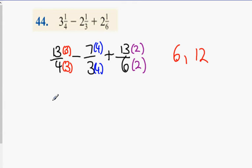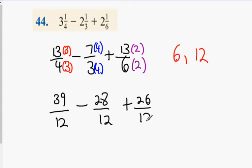So let's see what we get. We all get 3 times 13? 39 over 12 minus 28 over 12 plus 26 over 12. Now, the answer is going to be over 12. What's 39 minus 28? 11. 11 plus 26? 37. And that's our answer.